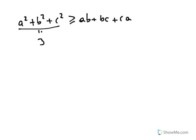Remember the inequality a² + b² + c² is greater than or equal to ab + bc + ca. Well, this is given to be 3, so ab + bc + ca is less than or equal to 3.